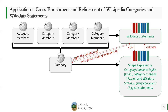As well, the category page itself has its own Wikidata item including category main topic statements, category contains statements, Wikidata SPARQL queries equivalent statements, as well as shape expressions. So the statements about the category can be used to validate the Wikidata statements of the category members. As well, the Wikidata statements of the category members can enrich the Wikidata item about the category by including more information about the category.